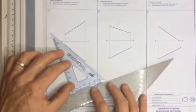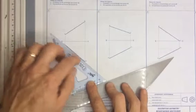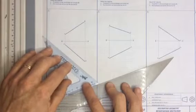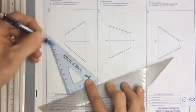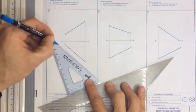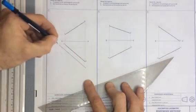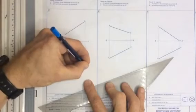I take my set square, I line it up on the edge over there, I move it down approximately 10 millimeters and I draw a line. That line I label it X1 Y1.